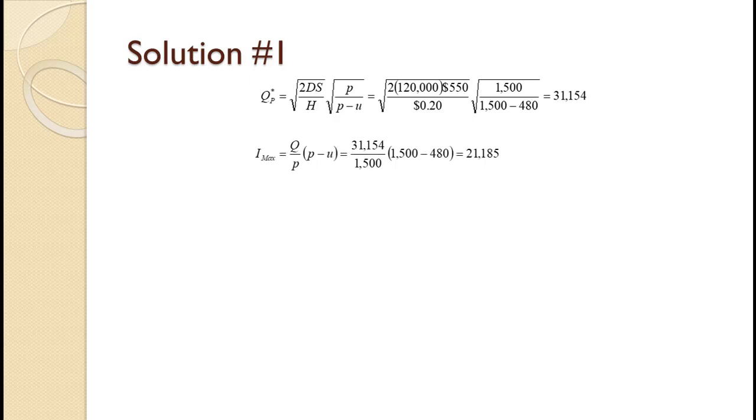Using the Q value of 31,154, the daily production of 1500, and the daily usage of 480 gives us a maximum inventory of 21,185. That maximum inventory divided by 2 gives us an average inventory of 10,592.5.